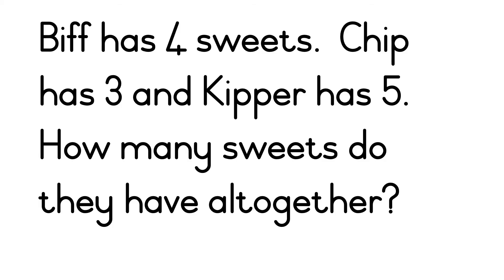Right, and now we've got our first word problem. I'm going to read it for you, and then you are going to draw your picture. Underneath your picture you're going to write your number symbols for me and then your sum at the bottom. Biff has 4 sweets, Chip has 3, and Kipper has 5. So Biff has 4, Chip has 3, and Kipper has another 5. How many sweets do they have altogether? Now you are going to draw your picture of Biff's 4, Chip's 3, and Kipper's 5, and then write your sum down at the end.